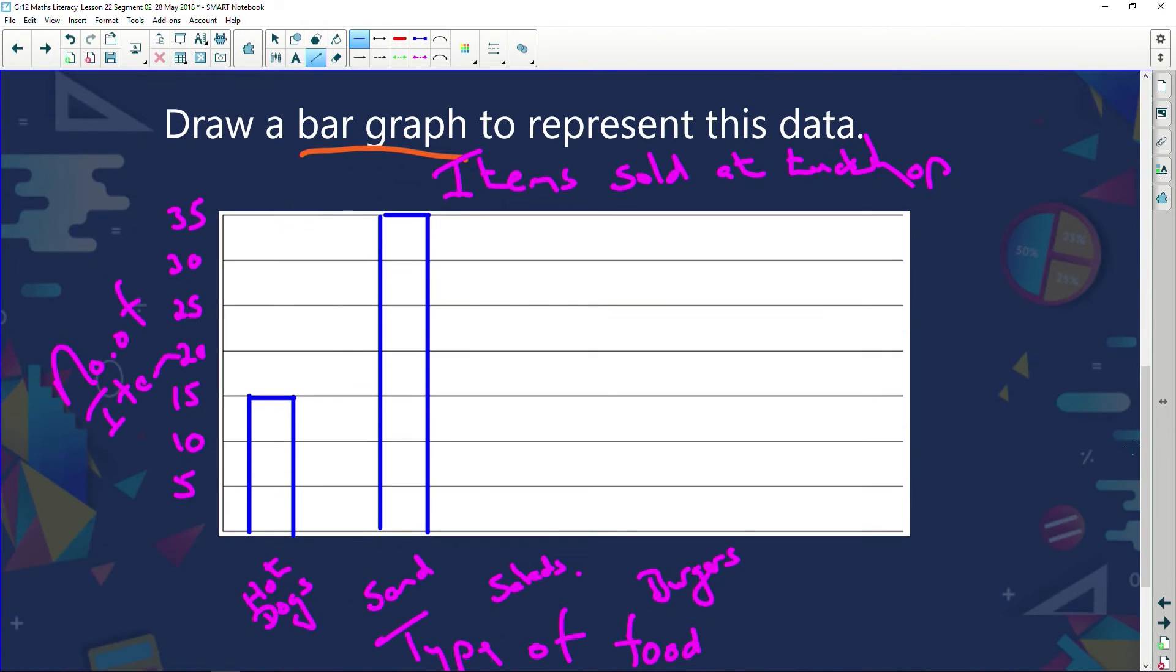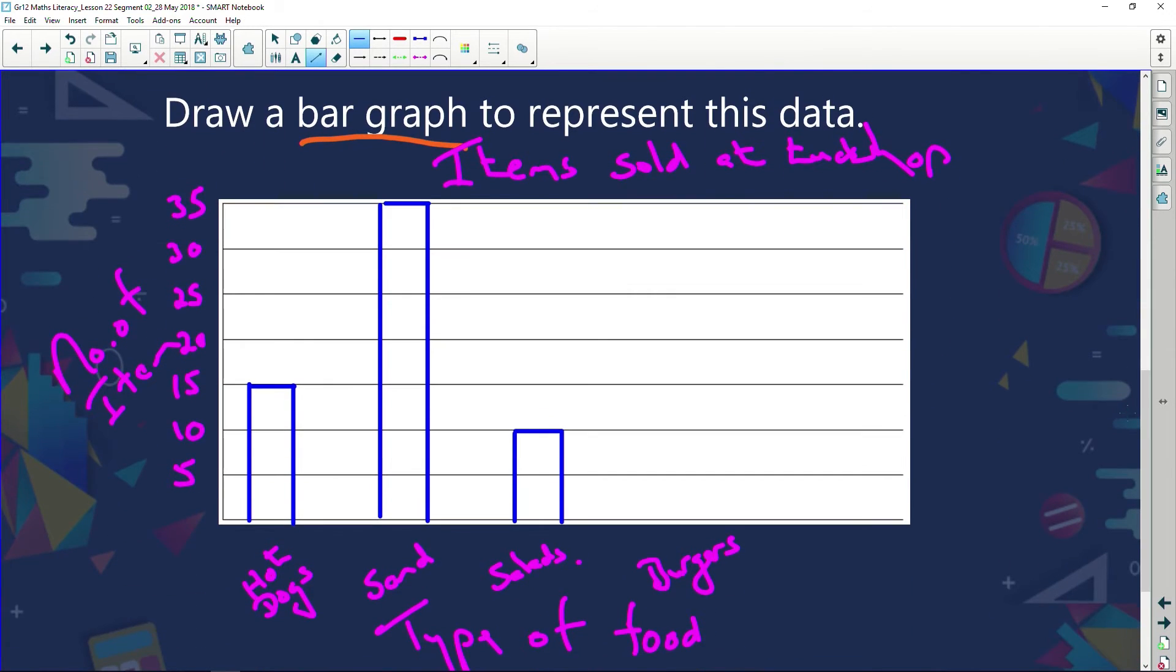Now salads. We said there are 10 salads. So I'm going to draw 10 salads. There is my salads, 10, and 10 salads, and across there as well. Burgers. How many burgers did we sell? We sold 12. Now, folks, 12 we can't see on our set of axes, but we know that halfway is going to be round about 12 and a half because 10, 15, 12, 12 and a half. So it's slightly lower than my halfway mark. So let's draw that quickly. Burgers just slightly lower than my halfway mark. There's my burgers. Here are my burgers. And a line across.